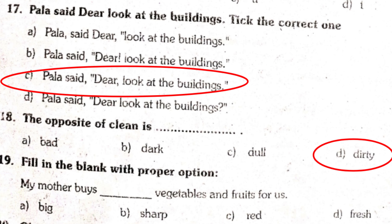19th question: fill in the blanks with the proper option. My mother buys dash vegetables and fruits for us. 1st option big, 2nd option sharp, 3rd option red, 4th option fresh. So dear students, 4th option is the correct answer — my mother buys fresh vegetables and fruits for us. Jo meri mother hai woh hamare liye fresh sabziyan aur fal jo hai woh khareed kar laai hai.